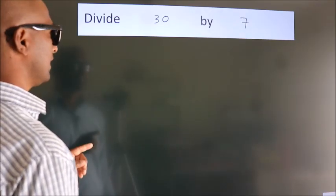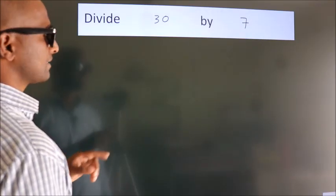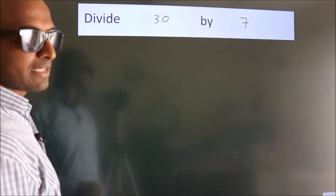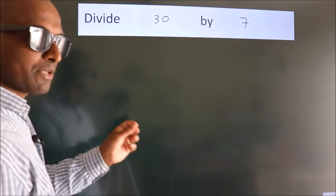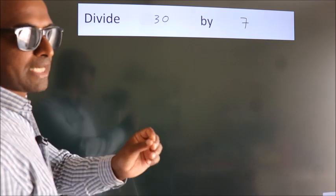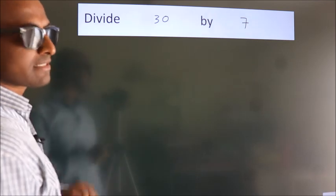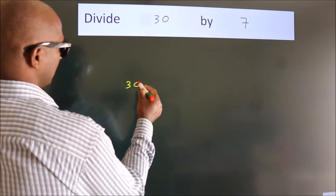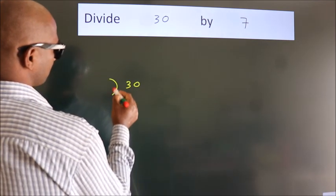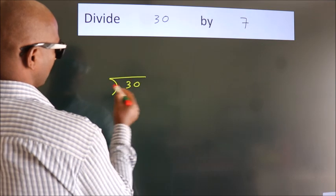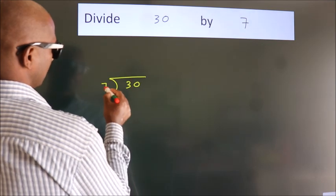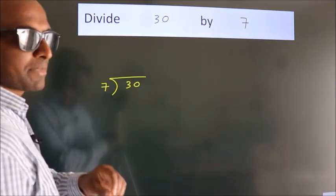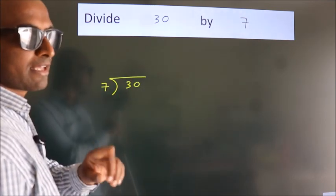Divide 30 by 7. To do this division, we should frame it in this way: 30 here, 7 here. This is your step 1.